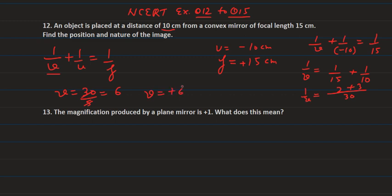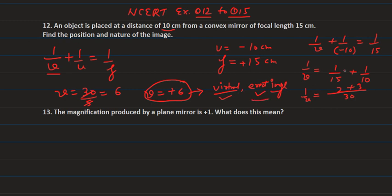The value of v is +6 cm. The positive sign tells us the image is formed behind the mirror, at a distance of 6 cm. Since it is behind the mirror, the image is virtual and erect. So the answer for question 12 is v = +6 cm, and the image is virtual and erect.